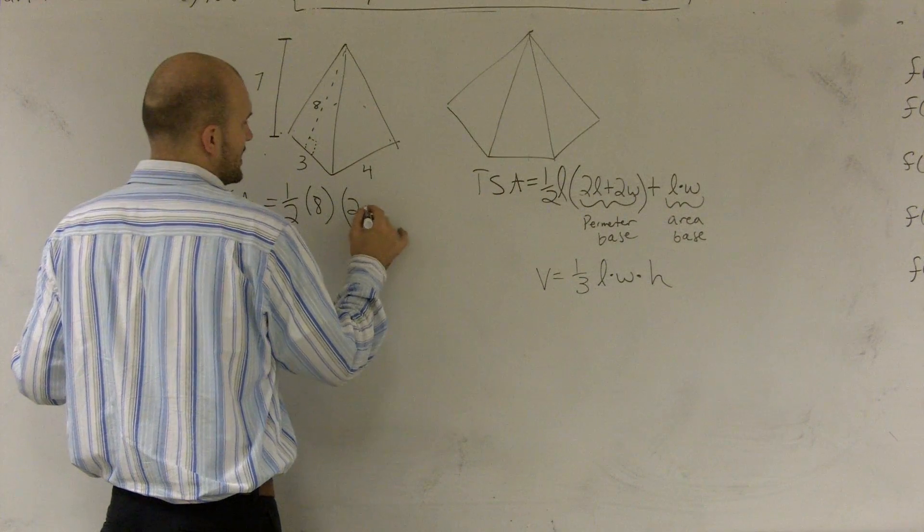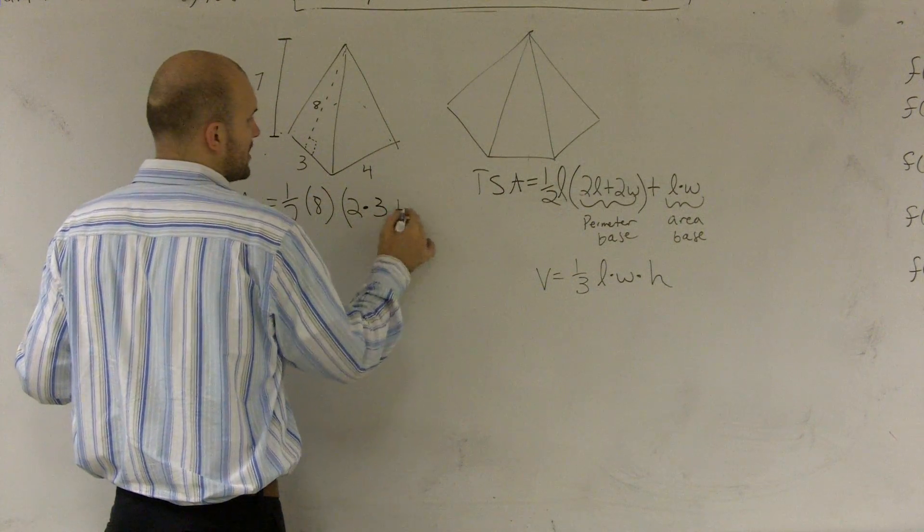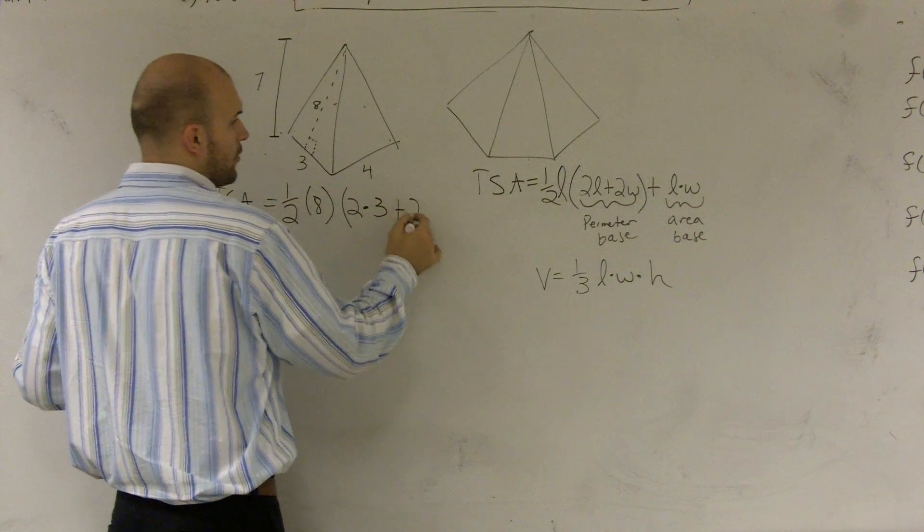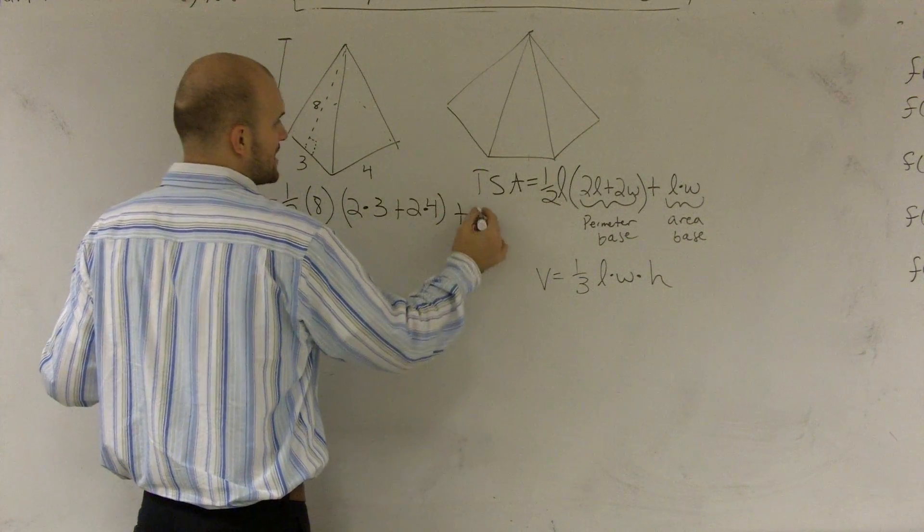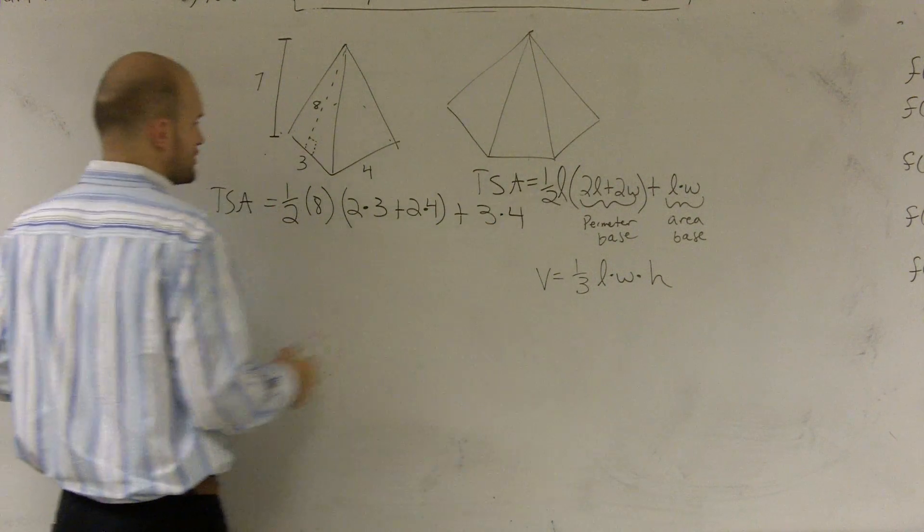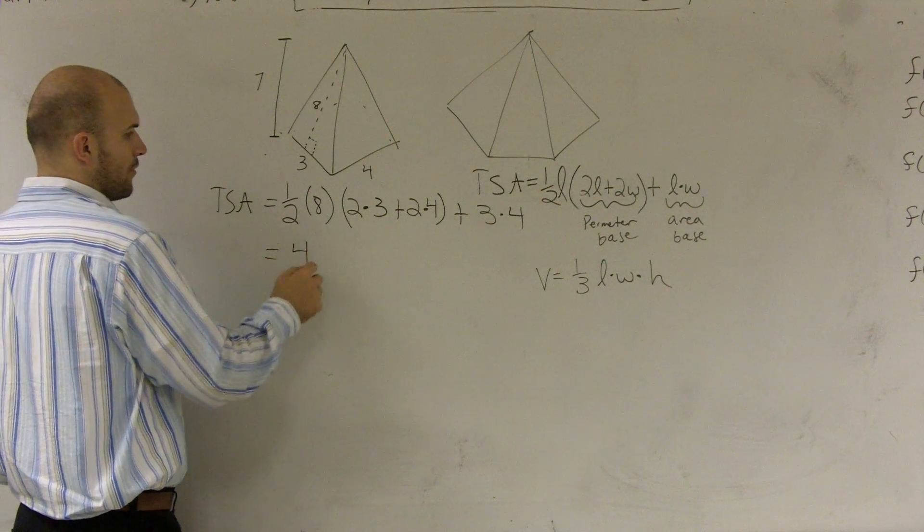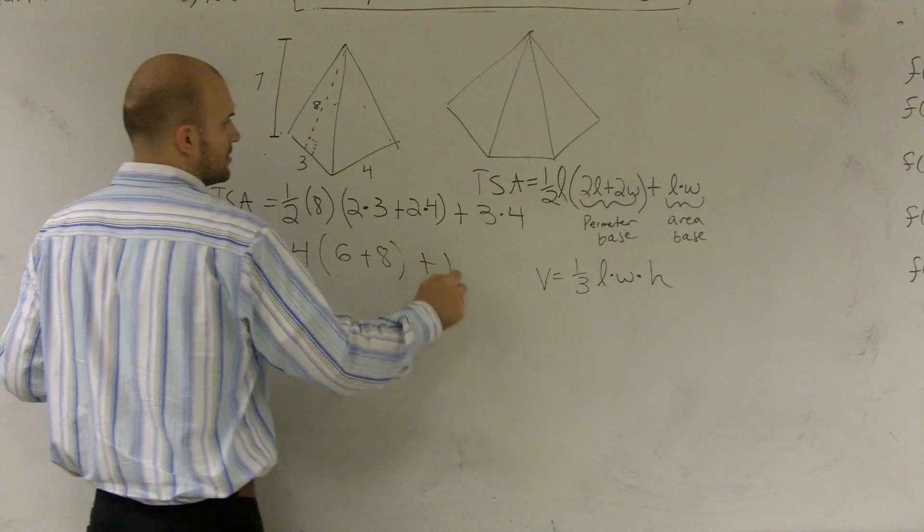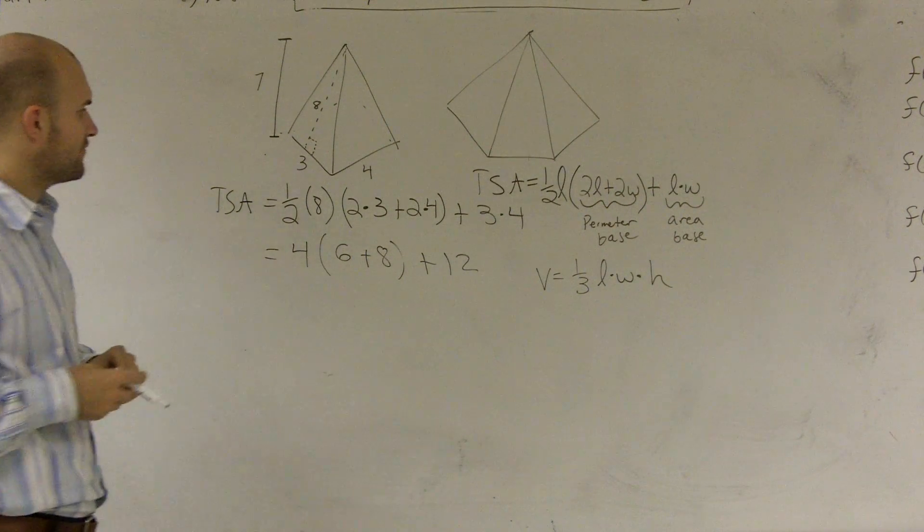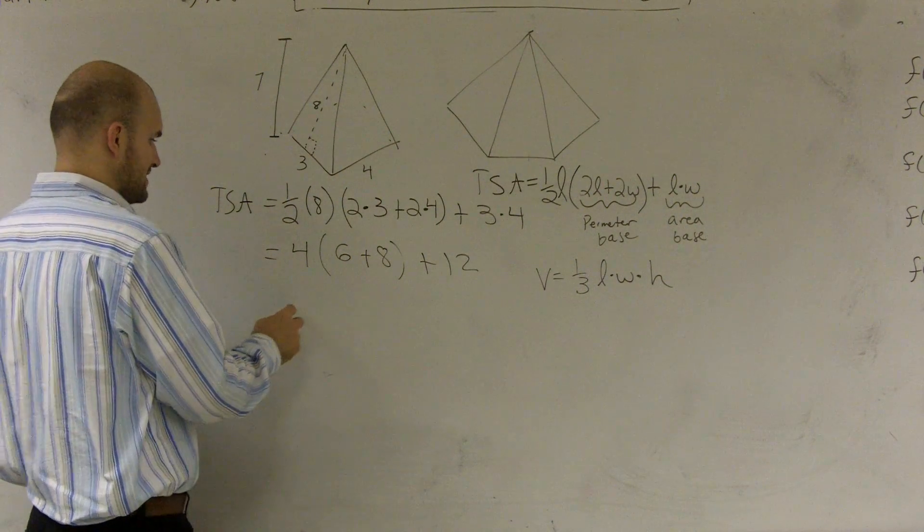I'll just do 2 times 3, plus 2 times my width, which would be 4, plus 4, 3 times 4. So just doing a little math here. This gives me 4 times 6, plus 8, plus 12.